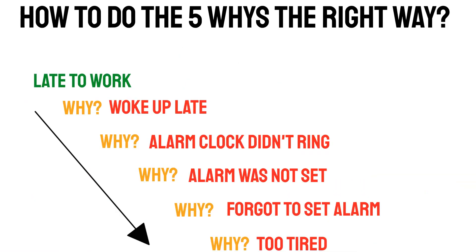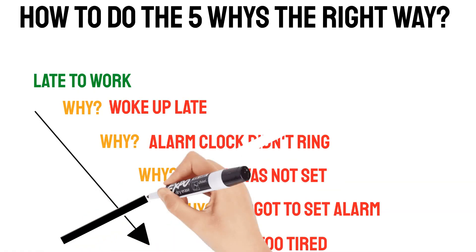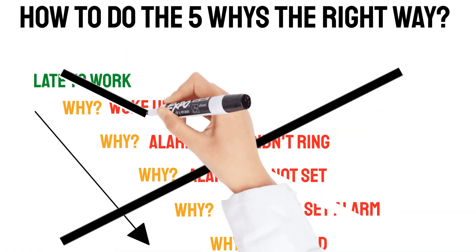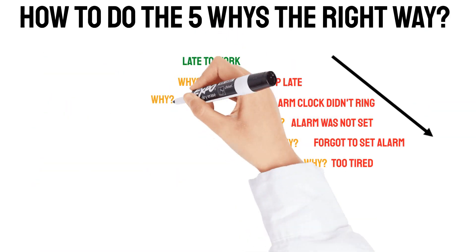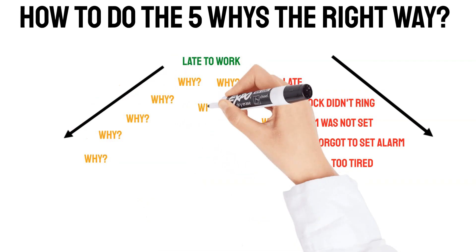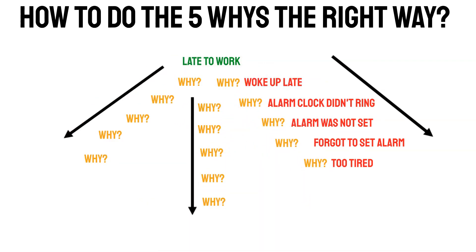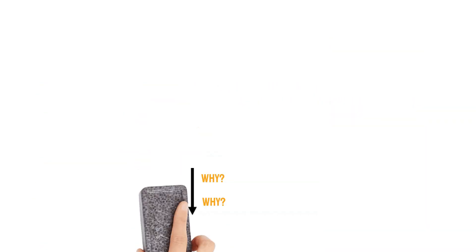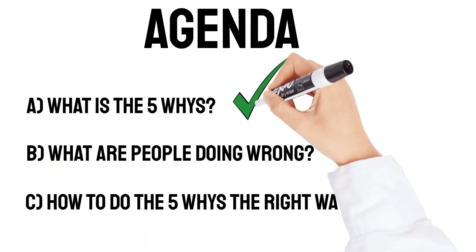This is the power of the logic tree and the flaw of using the 5 whys incorrectly. Let's stop making the 5 whys a linear process, because it isn't — it is multidimensional and way more complex. The logic tree helps us keep the overall overview so we don't get stuck in a single path, or even the wrong one.